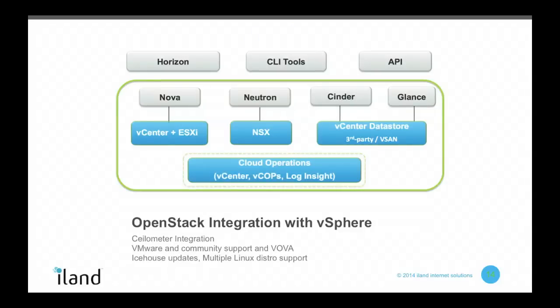Shifting gears a little bit: what is the current state of OpenStack integration with vSphere? I realize that Ceilometer is not shown here, and we can talk about that. Today, if you look at the top row, you have Horizon, CLI tools, and API - the traditional services that your admins, users, and tenants would use to access your system. As far as the OpenStack components go, Nova speaks directly with vCenter and ESXi, Neutron with NSX, and Cinder and Glance again with vCenter. Although NSX looks different, it's a component that gets installed and managed somewhat in vCenter, and the rest of these components talk directly with vCenter.